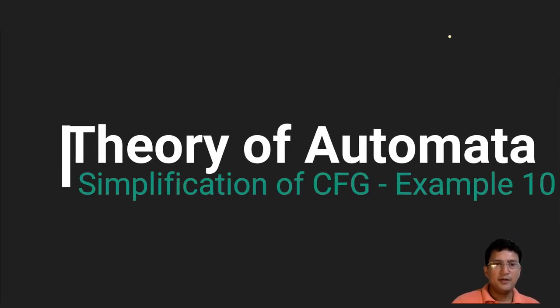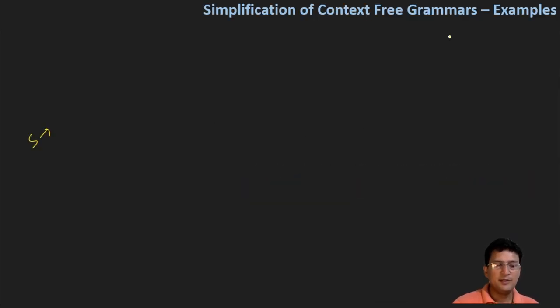Let's take another example for the simplification of the grammar. The grammar is given as: S produces small a b small a, then BC. A produces a small a and capital C, then BCC. C produces small a. B produces b, capital C, and capital C. D produces E, and E produces D.